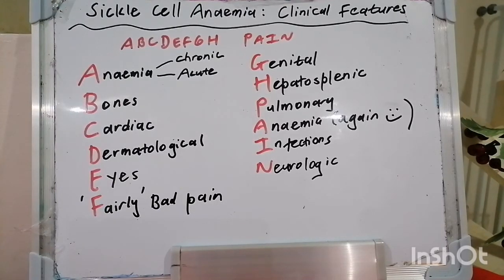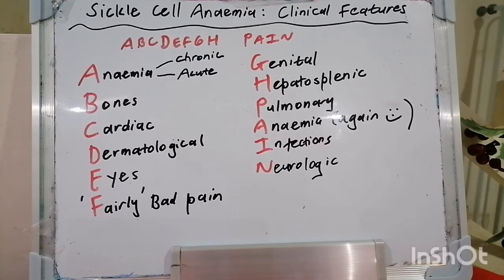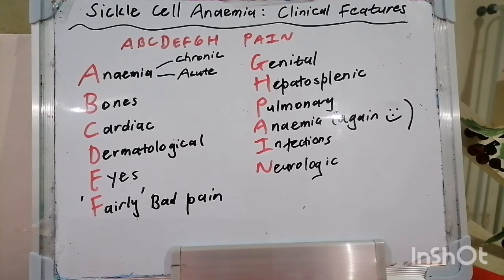In terms of specimens for microbiology, send off blood cultures and sensitivities, sputum Gram stain with acid-fast bacilli and MCS, urine culture and sensitivity, stool culture and sensitivity, stool for ova and parasites, and for C. diff toxin A and B.